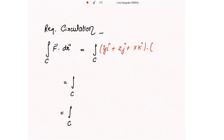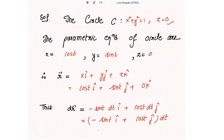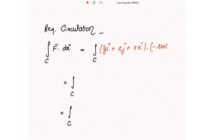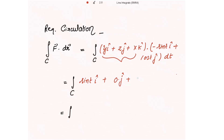Taking the dot product of f vector with dr vector: f = yî + zĵ + xk̂ dotted with (-sin(t)î + cos(t)ĵ) dt. Writing the first bracket in terms of t: y = sin(t)î, z = 0 so 0ĵ, and x = cos(t)k̂. Then dotting with (-sin(t)î + cos(t)ĵ) dt.